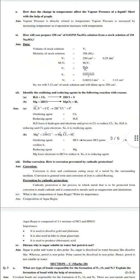Question 10: How does the change in temperature affect the vapor pressure of a liquid? Show with the help of a graph. Vapor pressure is directly related to temperature and is increased when increasing temperature. Vapor pressure is directly proportional to temperature. When temperature increases, vapor pressure also increases.